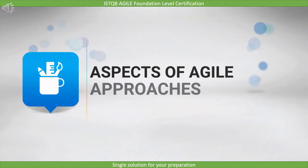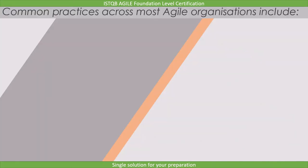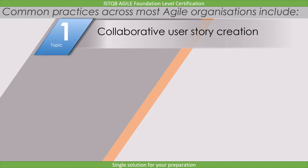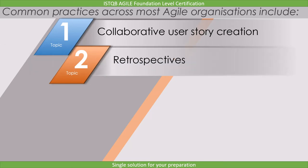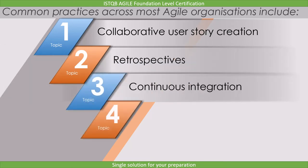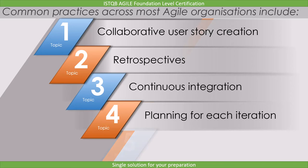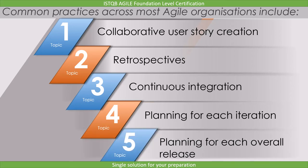In this lecture, we will see the overview of aspects of Agile approaches. There are several Agile approaches in use by organizations. Common practices across most Agile organizations include collaborative user story creation, retrospectives, continuous integration, planning for each iteration, planning for each overall release, and a few of these we will cover in the upcoming lecture.